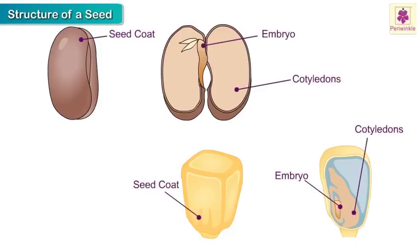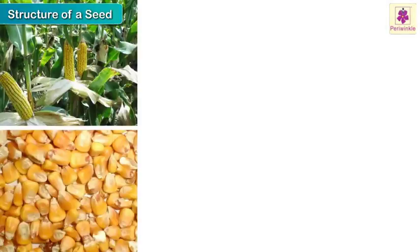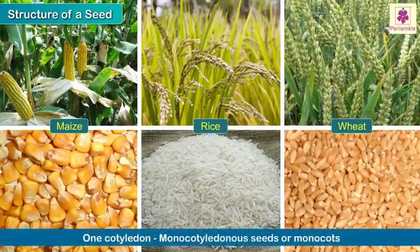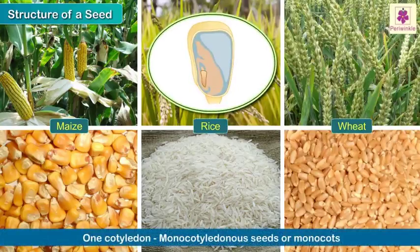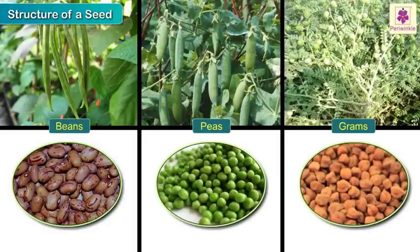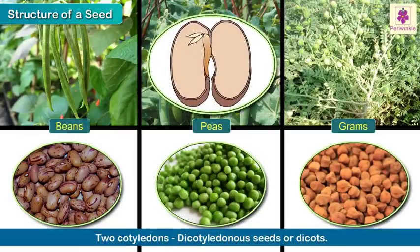There are two seed leaves called cotyledons. They store food and provide nutrients to the growing embryo. Some seeds like maize, rice, and wheat have one cotyledon and are called monocotyledonous seeds, or monocots. Seeds of beans, peas, and grams have two cotyledons and are called dicotyledonous seeds, or dicots.